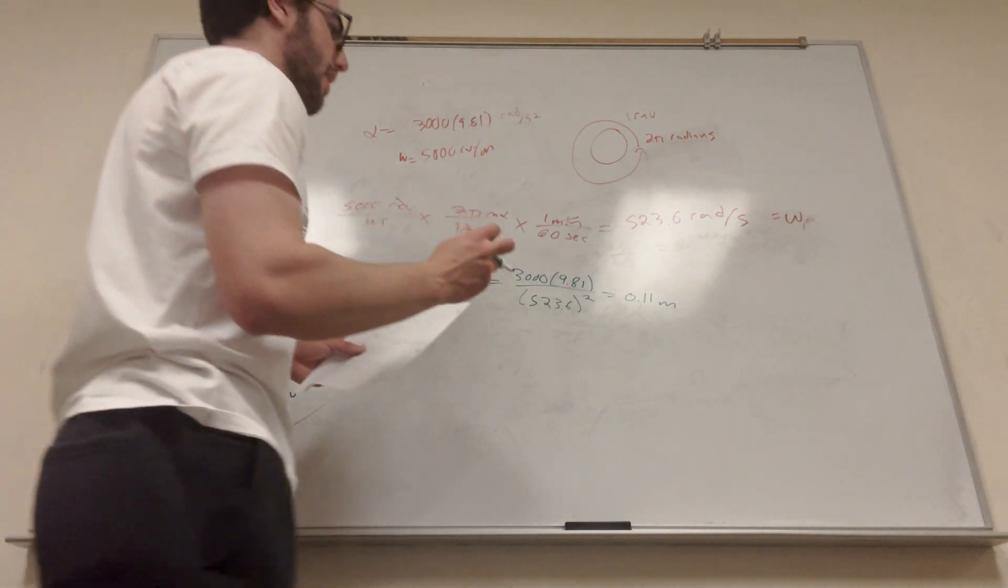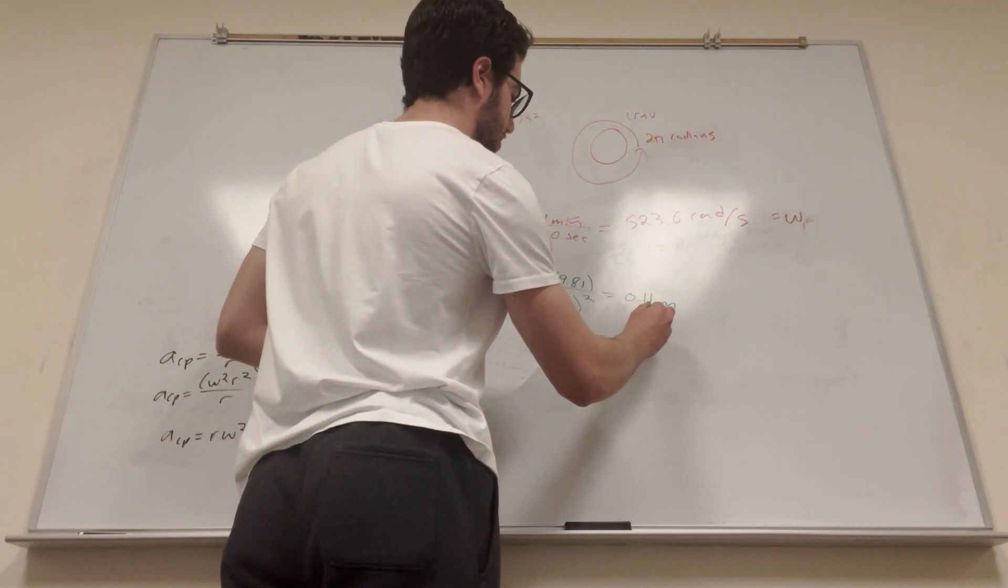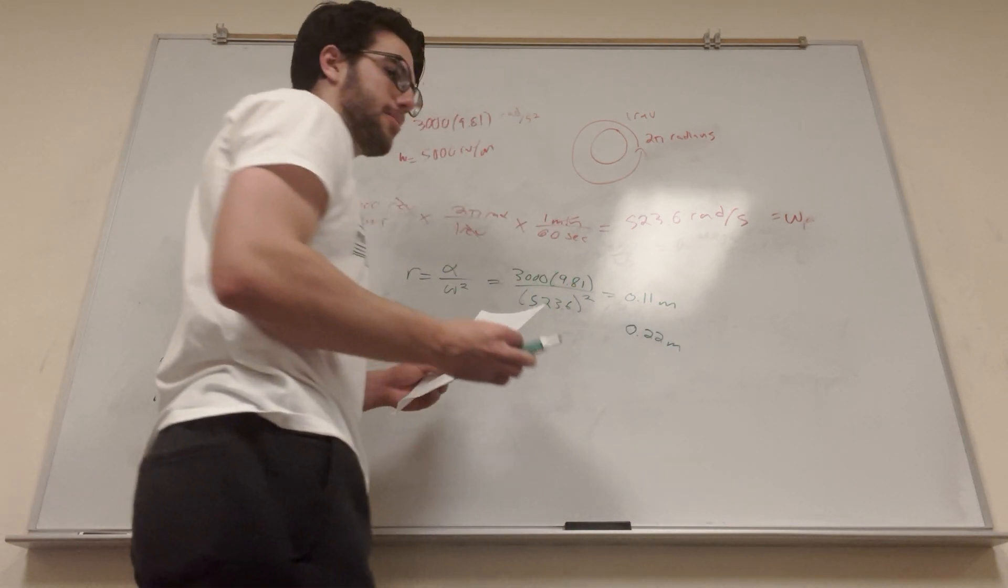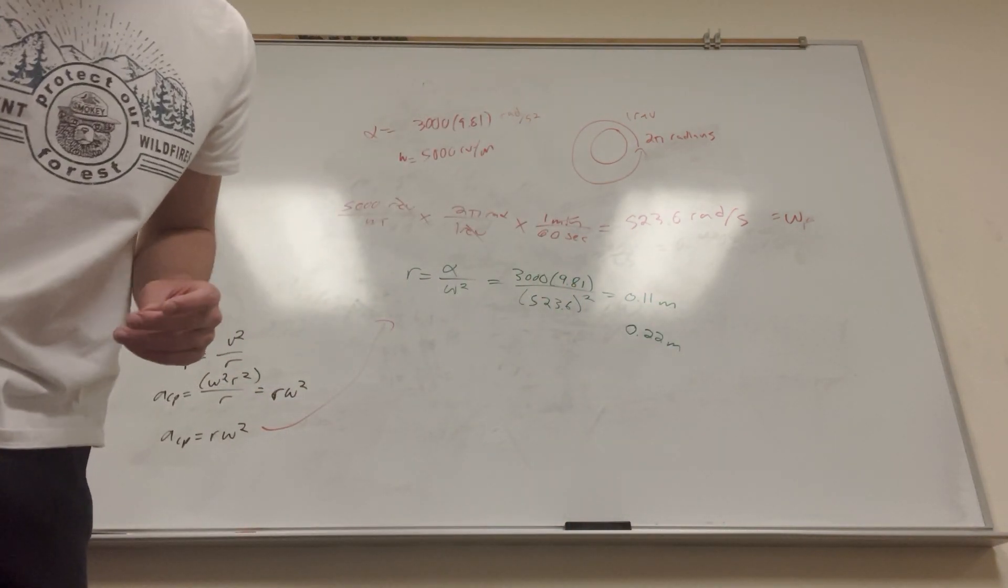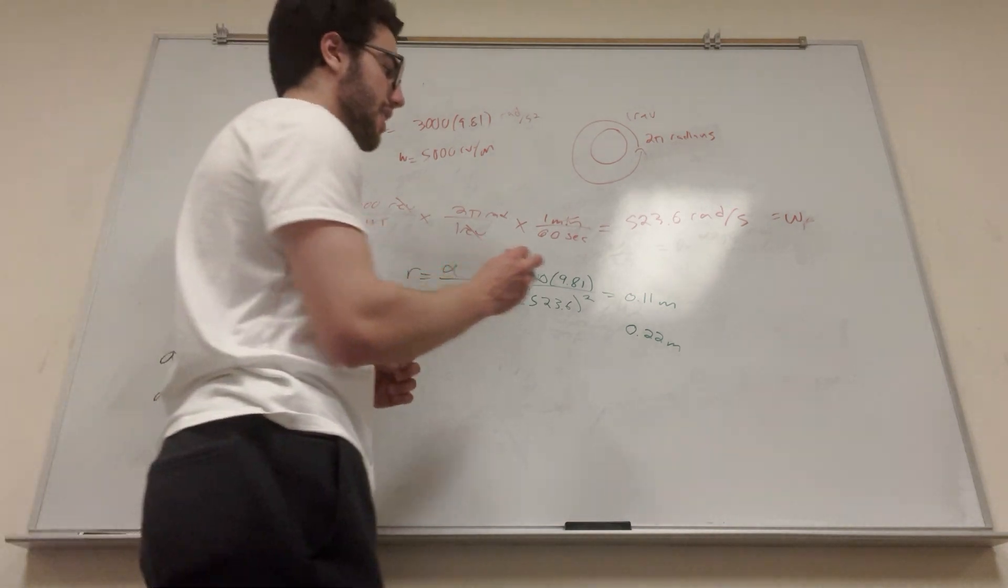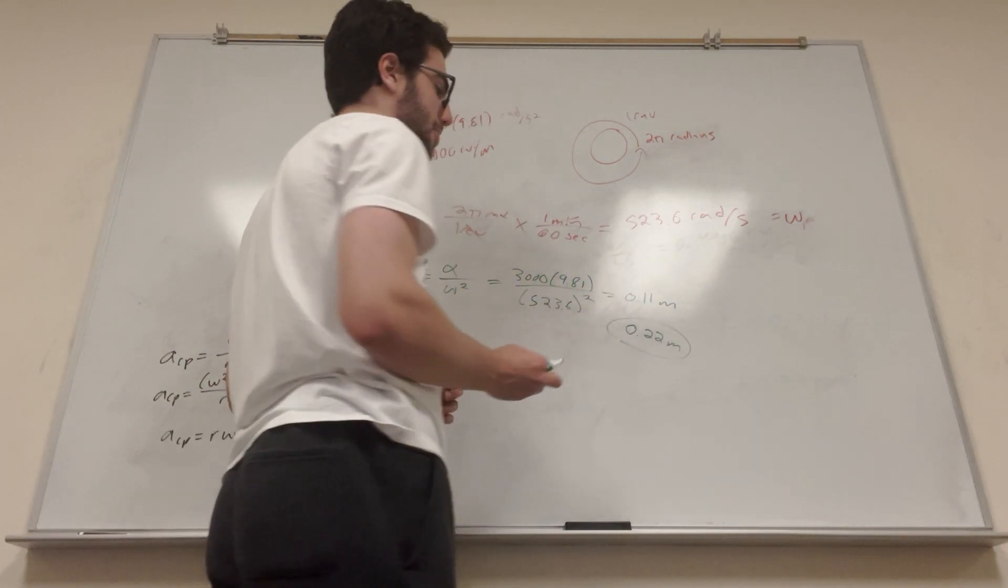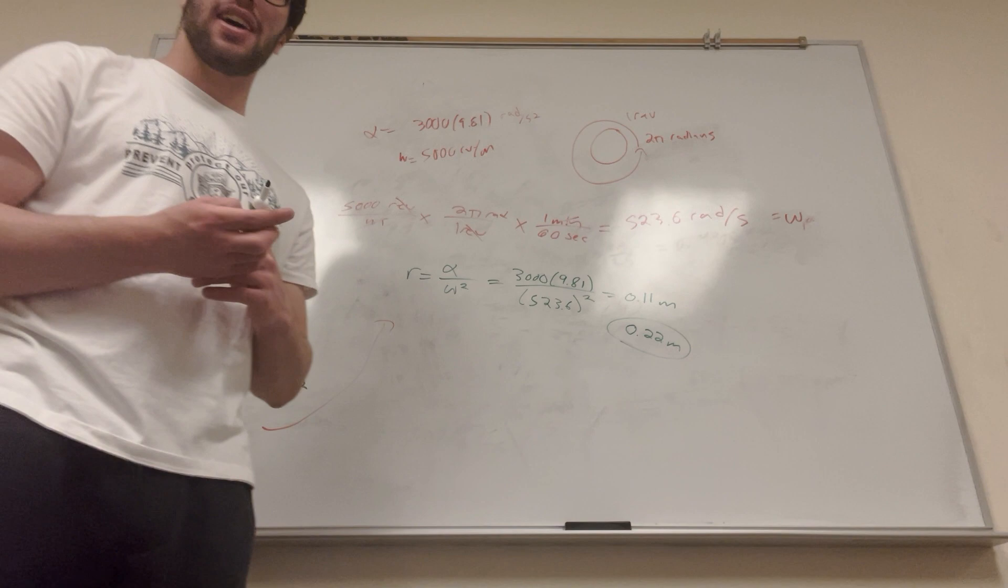So 0.11 meters, if you multiply that by two, the diameter is going to be 0.22 meters. But it said that it only takes up 0.127 meters of bench space. Clearly it takes up more bench space. So this claim is not reasonable.